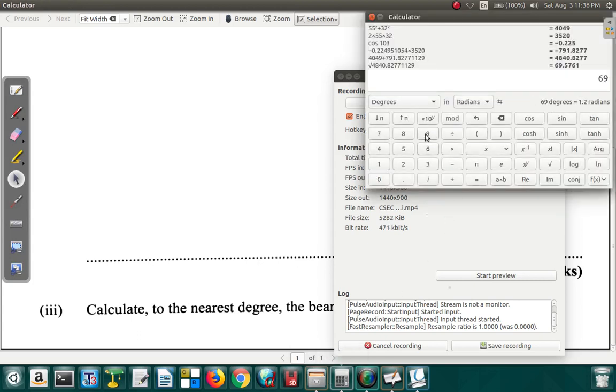So 69.6 over sine 103. And remember we're dealing with degrees, so you must make sure your scientific calculator is in degree mode. I have 71.4, and I have 71.4 here.